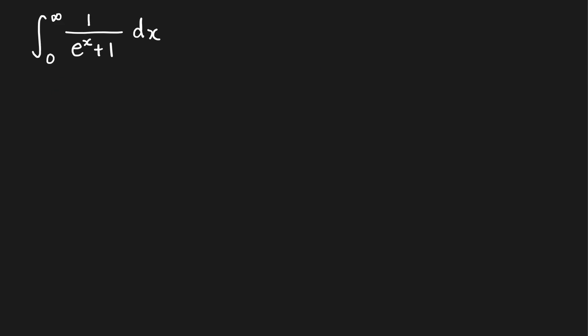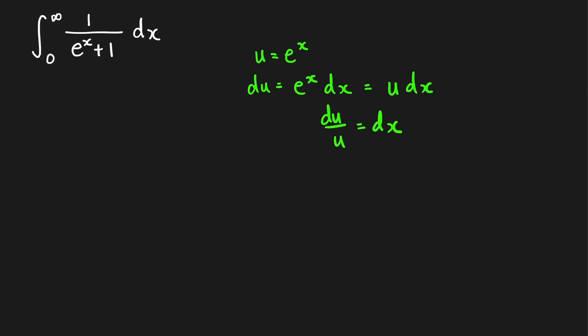Next problem. Looking at this second integral, we can solve it by u-substitution. If we let u equal e^x, then du equals e^x dx, which can be written as u dx. This implies that du/u equals dx. So we can write our integral in the form: integral of 1/(u+1) times du/u.